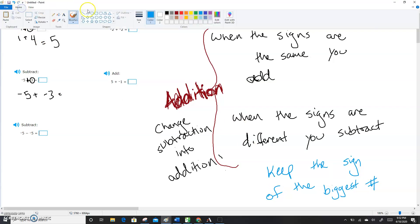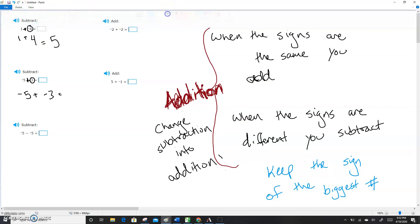So that negative five plus negative three, the biggest number here is five, negative five. So this is going to become negative eight.